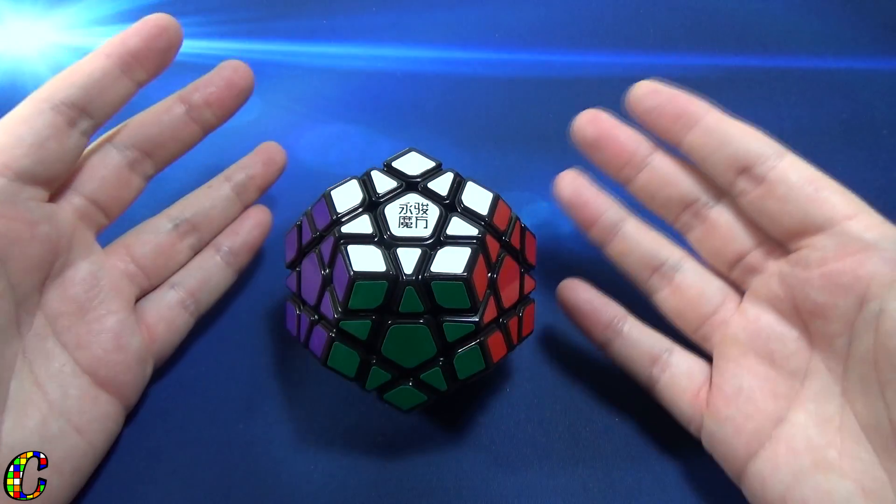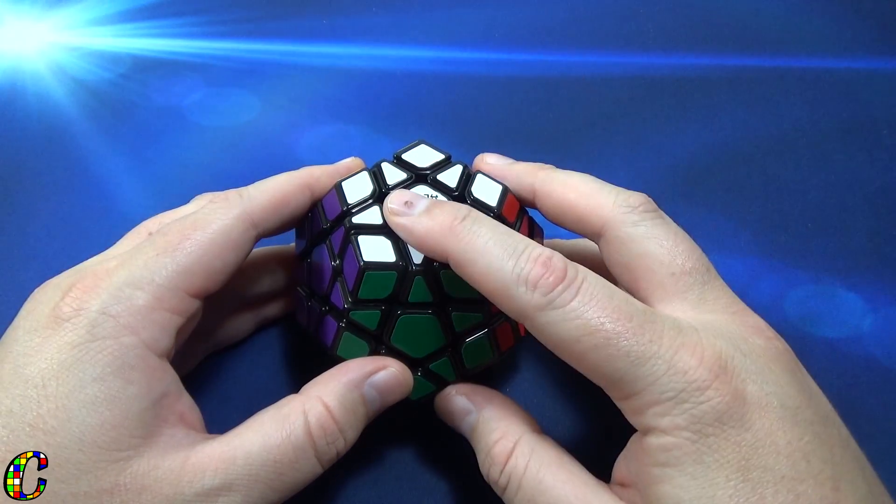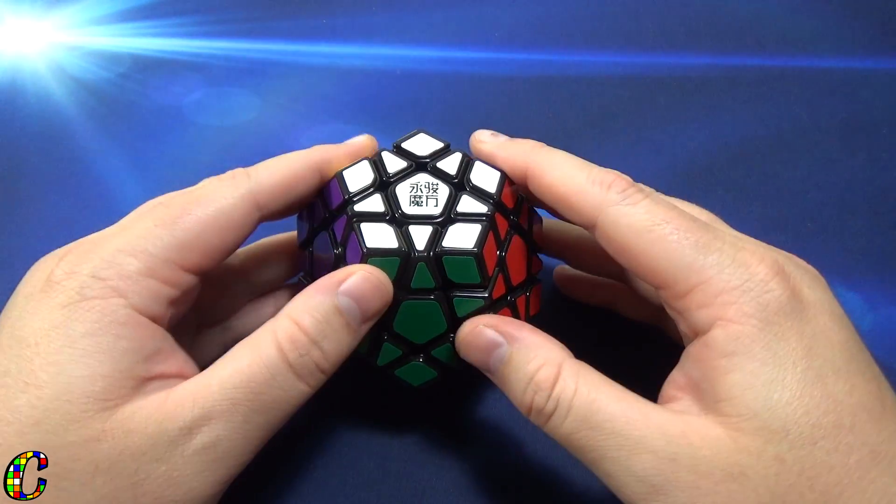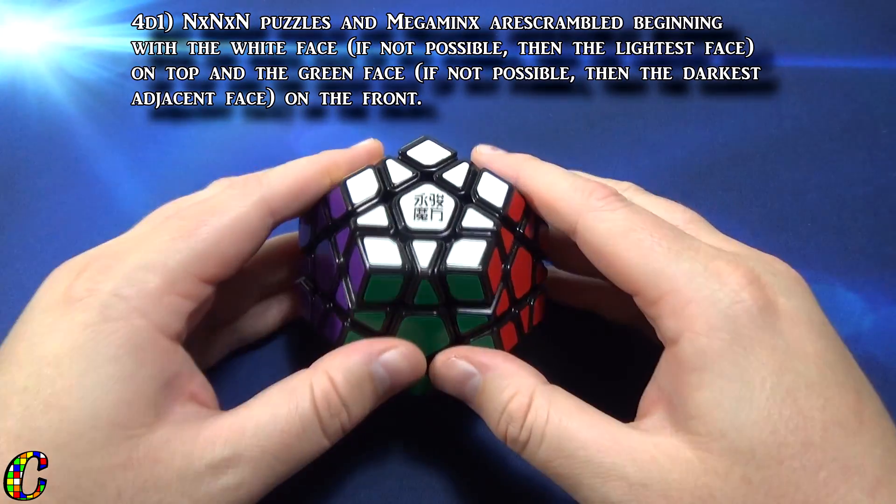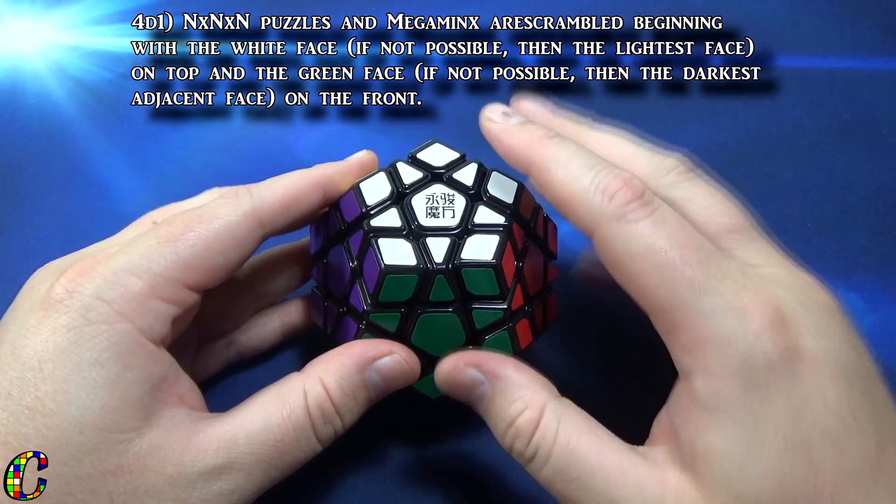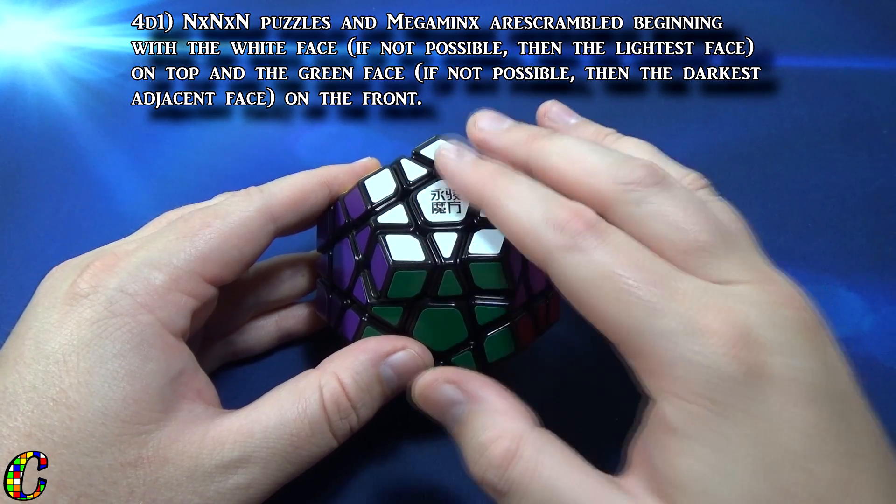Let's take a look at what the regulations say about scrambling a megaminx. In the regulations, rule number 4d1 talks about scrambling a megaminx and the orientation you have to use. What you do is you put the white face on top or the lightest face if there's not a white face.